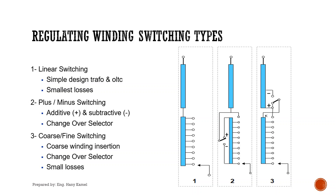For linear switching, it is mostly used when we have a fewer number of taps. In the case of distribution transformers, OCTC will be used, and in large distribution transformers, OLTC will be used depending on customer request. In case OLTC is used, no changeover selector will be available. For a larger number of taps, as in power transformers, reverse switching is commonly used. But sometimes, to meet customer requirements for load losses, the coarse-fine technique is used, as it gives lower DC resistance at the lowest tap.